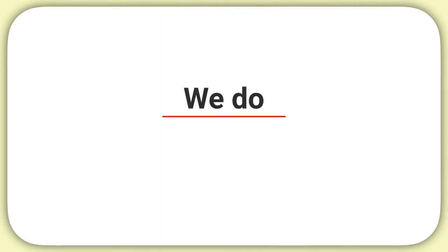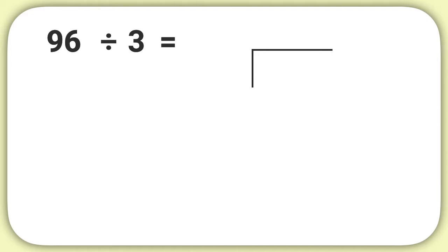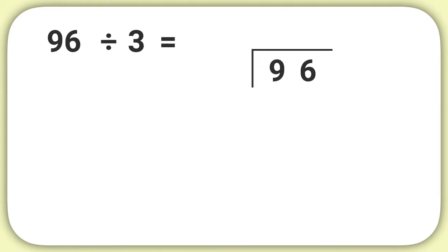Let's practice one of these together. Let's figure out what 96 divided by 3 equals. First, we need to write our problem using the long division symbol. We put the number we are dividing — the 96 — into the box. The 3 will go on the outside.